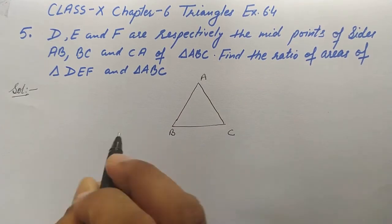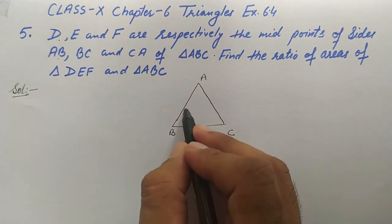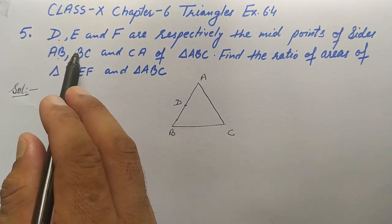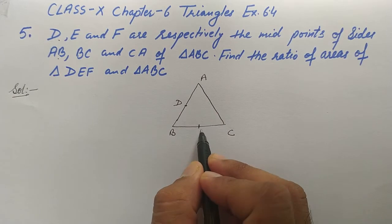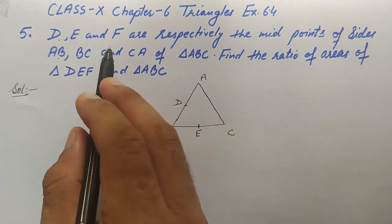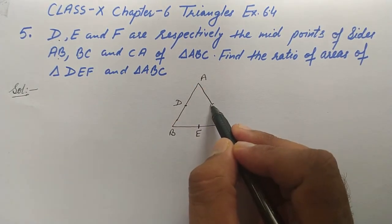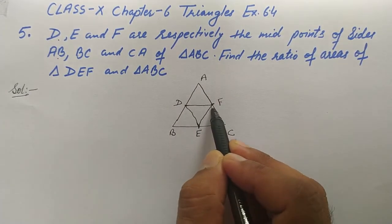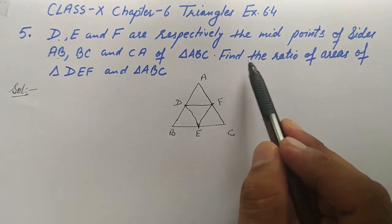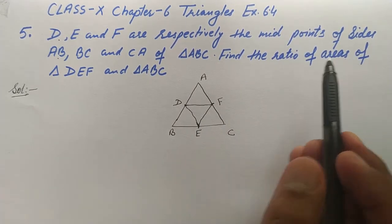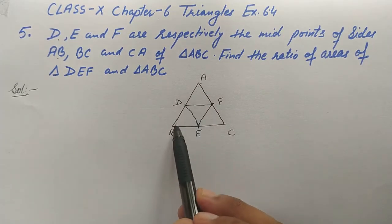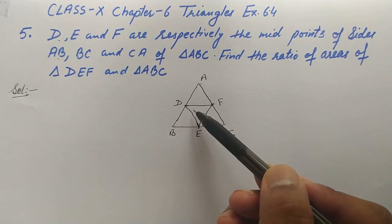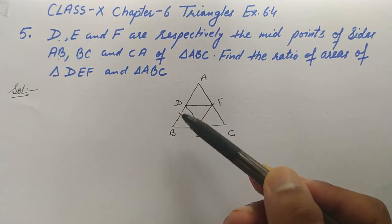D is the midpoint of AB, E is the midpoint of BC, and F is the midpoint of CA. If we join these three points, we get triangle DEF. We need to find the ratio of the areas of triangle DEF and triangle ABC — that is, area of triangle DEF over area of triangle ABC.